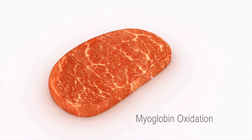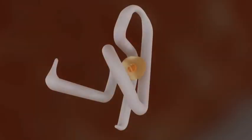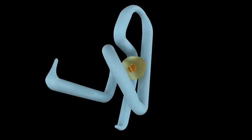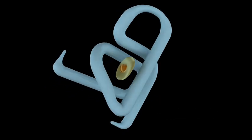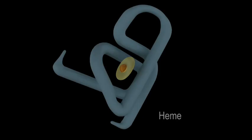Myoglobin is a sarcoplasmic protein that acts as the primary pigment for beef muscle color. Making up 80 to 90% of total pigment, myoglobin is made of two parts: a globular protein and a non-protein segment known as the heme or porphyrin ring, located at the center of the myoglobin molecule.